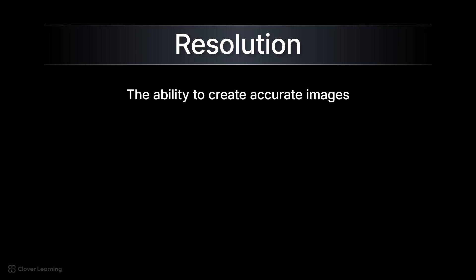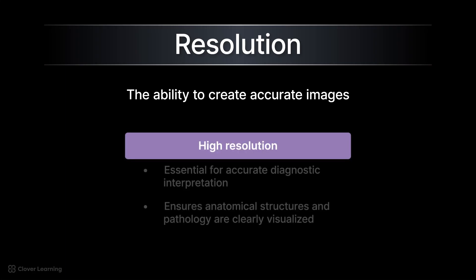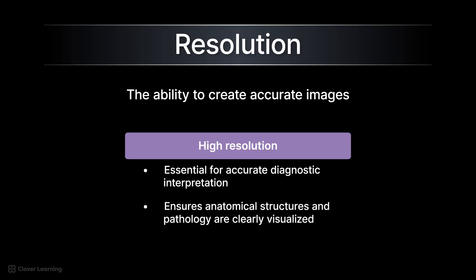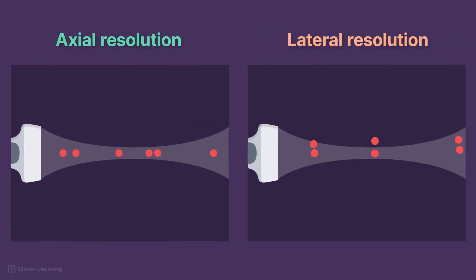First, let's define resolution. Resolution in ultrasound imaging is the ability to create accurate images. High resolution is essential for accurate diagnostic interpretation, ensuring that anatomical structures and pathology are clearly visualized. There are two main types of resolution that can help distinguish closely spaced structures as separate structures: axial and lateral. Each type plays a critical role in determining image quality.